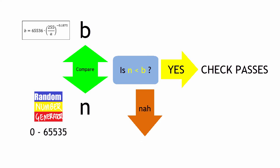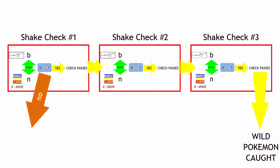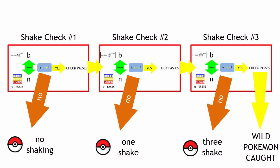At any shake check, if the generated number N is greater than or equal to B, the shake check fails and you don't catch your Pokemon. If you fail the first shake check, you won't even see the Pokeball shaking. If you fail the second, you'll see the ball shake once. If you fail the third, you'll see it shake three times. If you don't fail any of the three shake checks, you catch your Pokemon.